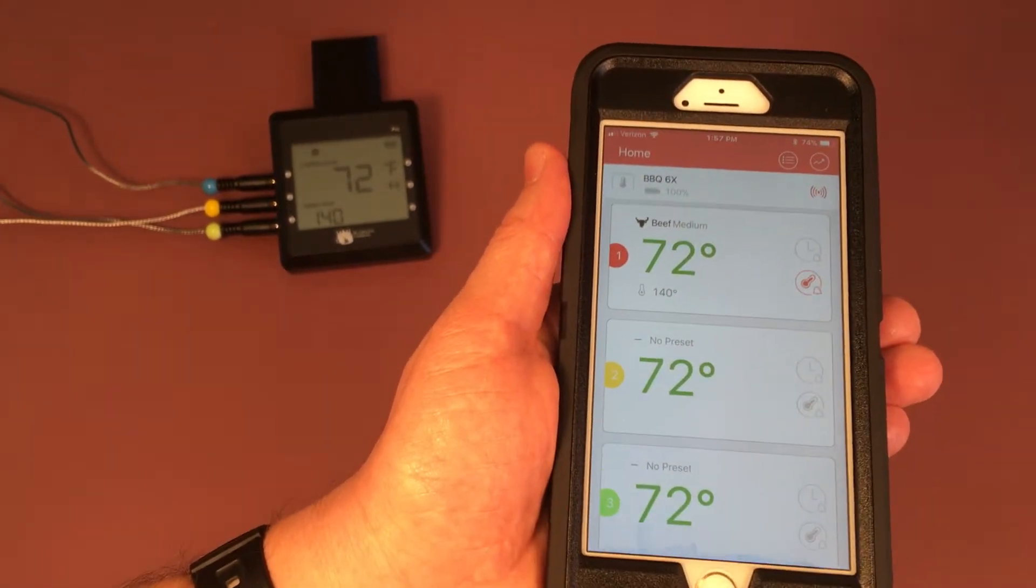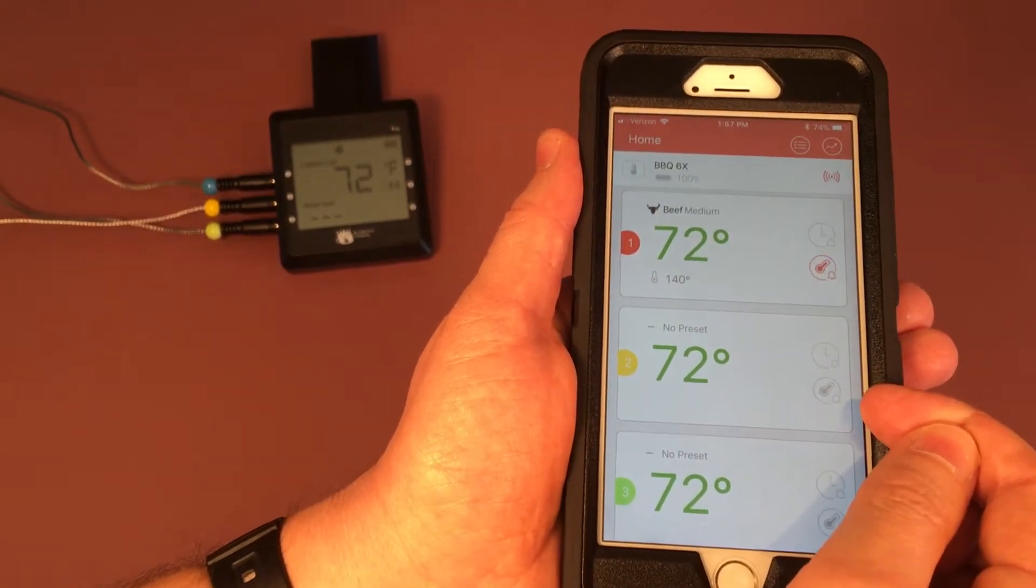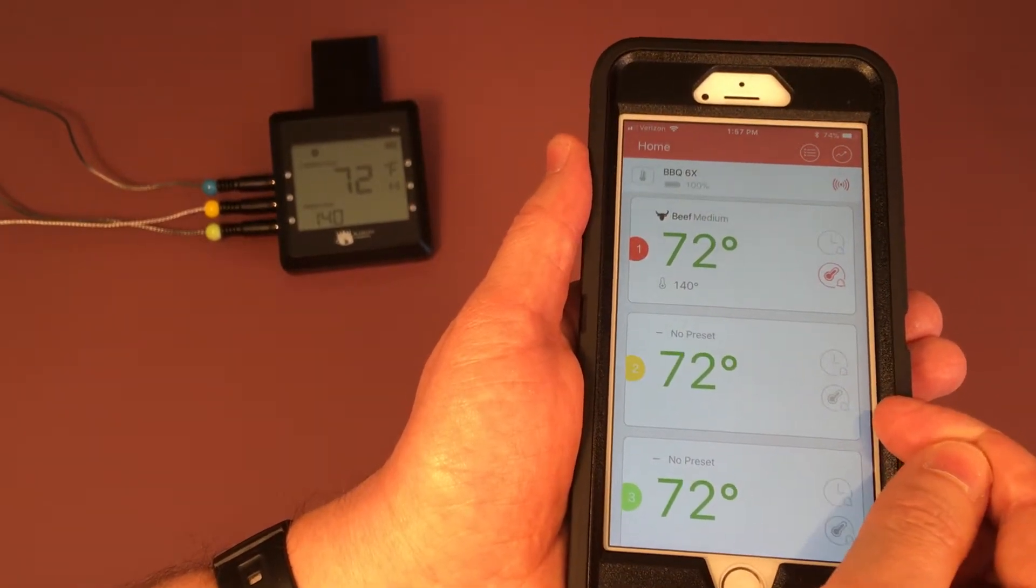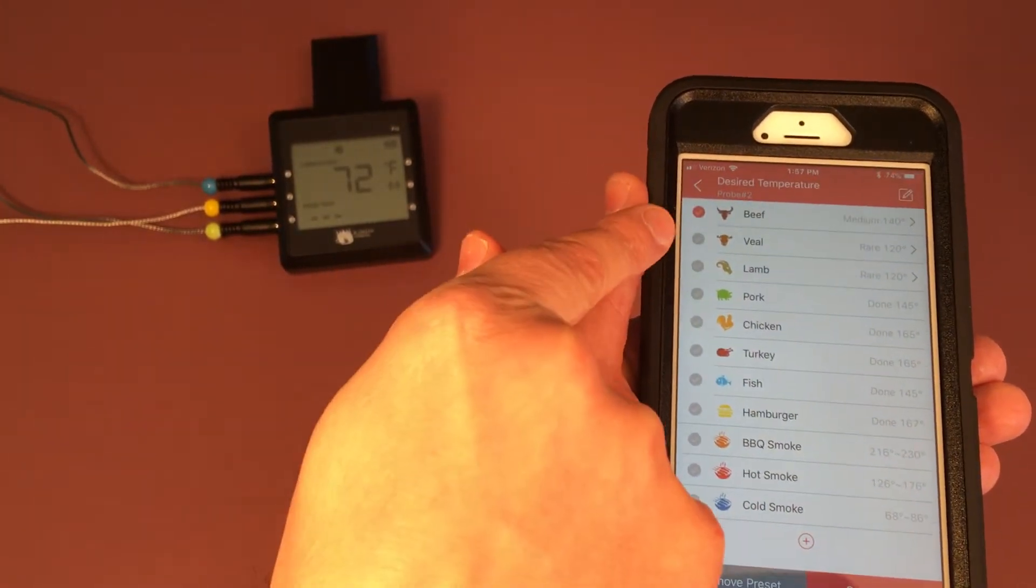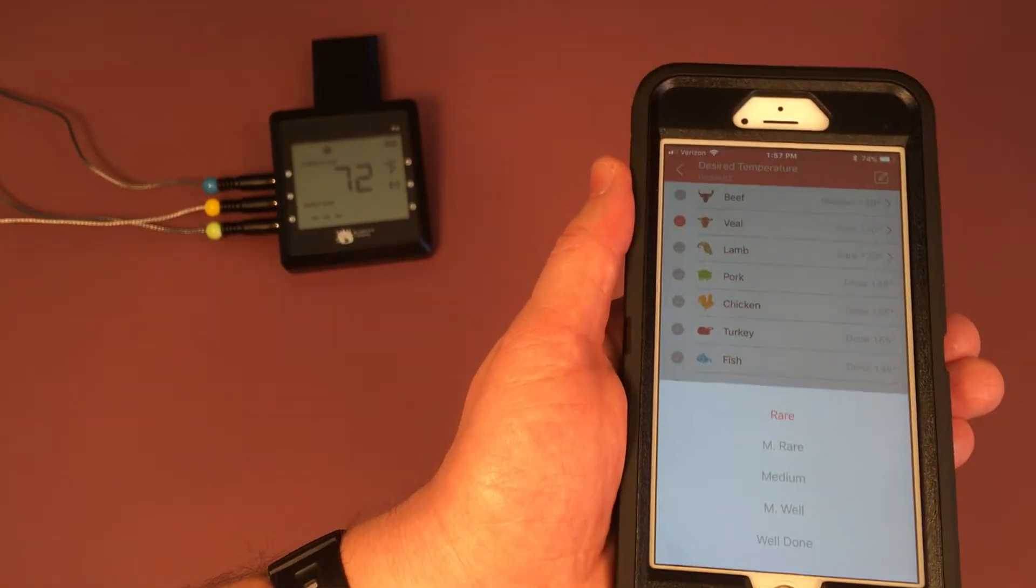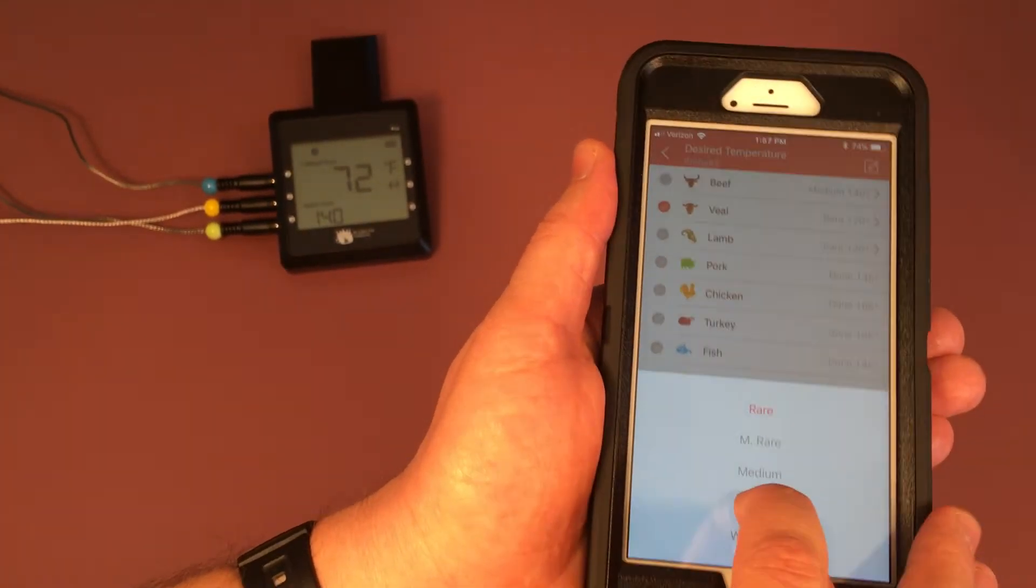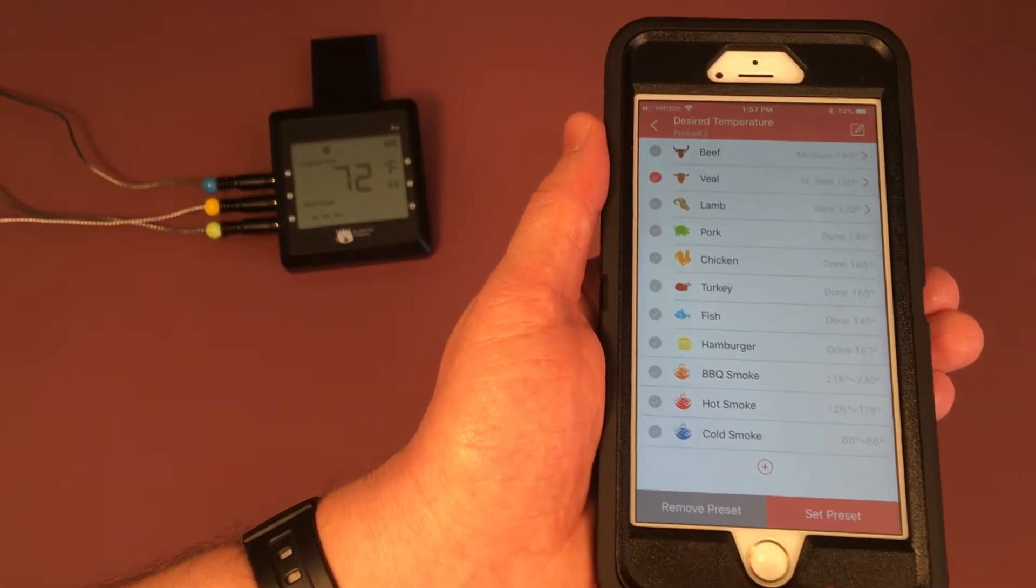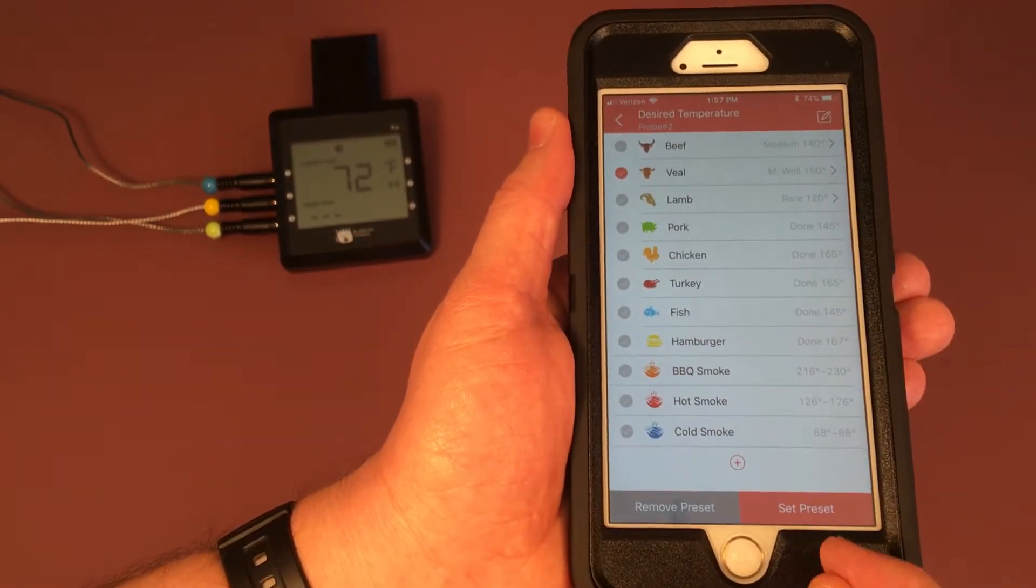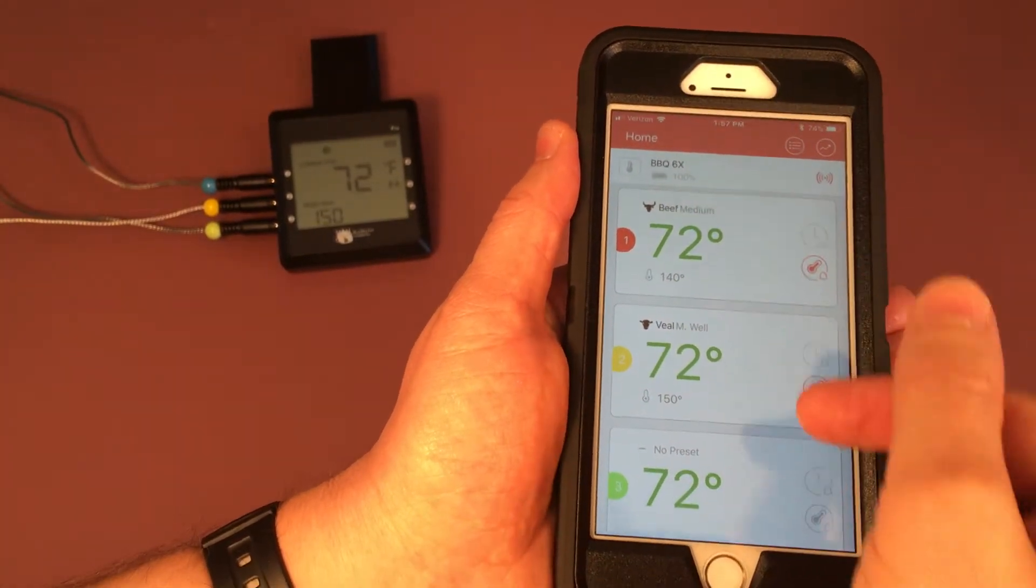We're going to go ahead and set the next preset. You can also hit on this thermometer icon here as well to go to that same menu. So this next one we're going to choose veal and let's choose medium well. Again, you need to make sure you hit the set preset button to save. Here you see veal medium well and the desired temperature of 150 degrees Fahrenheit.